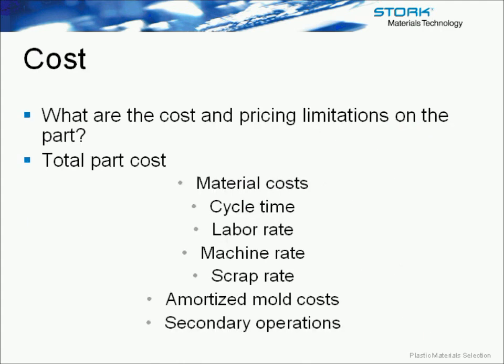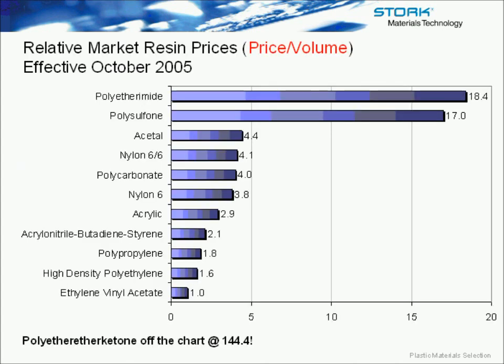And probably most important to everybody is cost. So what's the cost and price limitations on the part? But understanding that the total part cost is not just the material, but it also consists of scrap rate, cycle time, and labor rate. I would go as far as to say it also includes field failures. If you have warranty returns or field issues, your cost of that part is definitely going up as a result of that. And it's hard to track that on the front end, but it becomes very costly on the back end when you start seeing failures.